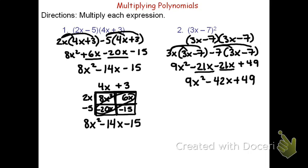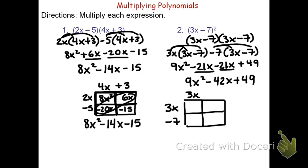I could also do this with the rectangles — I'm going to do it a little quicker this time. Start by drawing the box and splitting it into four pieces. Up on the side we have 3x minus 7, and across the top 3x minus 7. The 3x times 3x is 9x squared. Negative 7 times 3x, or 3x times negative 7, is negative 21x. On the bottom, negative 7 times 3x is also negative 21x. The diagonal ones are again my like terms. So combining, I have 9x squared minus 42x plus 49.